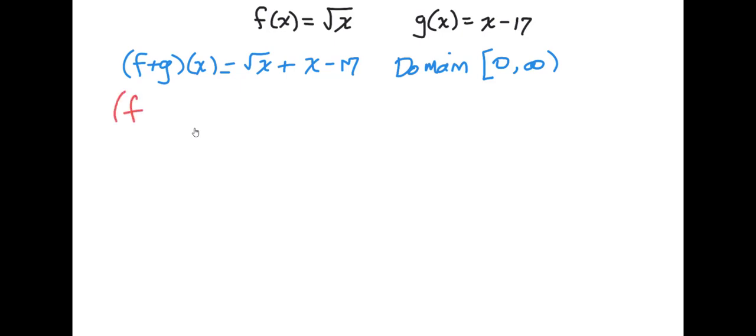All right, what if we wanted to subtract the two functions? The only part you have to be careful here is be sure that you distribute the negative sign. So what I like to do is put this in parentheses, and now I can distribute that negative, and a negative and a negative will be a plus 17. And it looks like my domain has not changed, so still would be 0 to infinity.